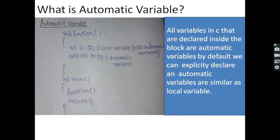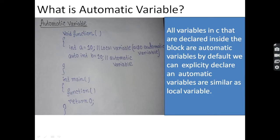Next, what is an automatic variable? An automatic variable is a variable that is declared inside the block. Automatic variable is similar to the local variable because the local variable is also declared inside the block or within the block. All variables in C that are declared inside the block are automatic variables by default.